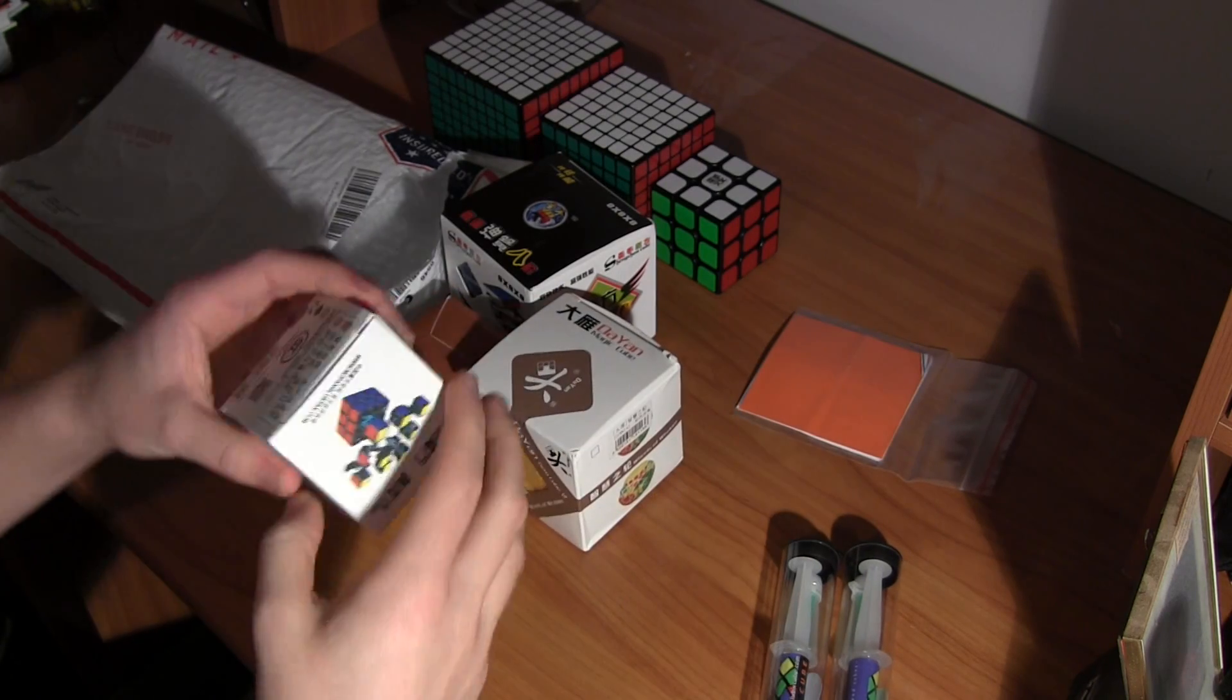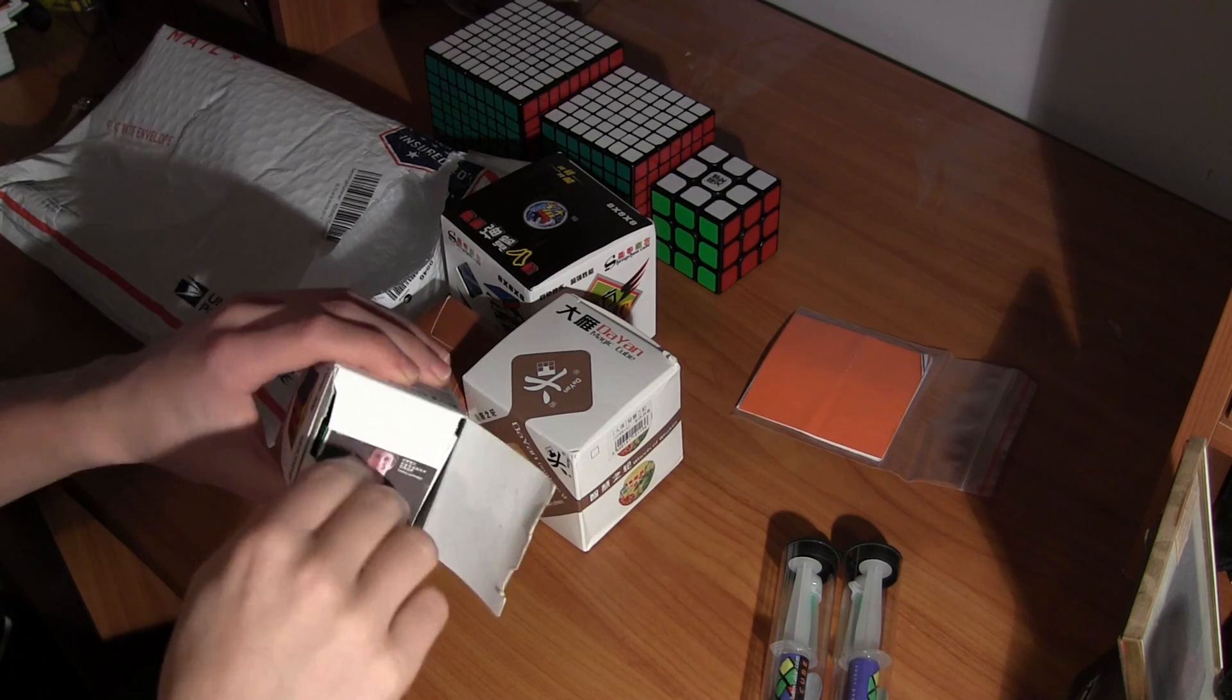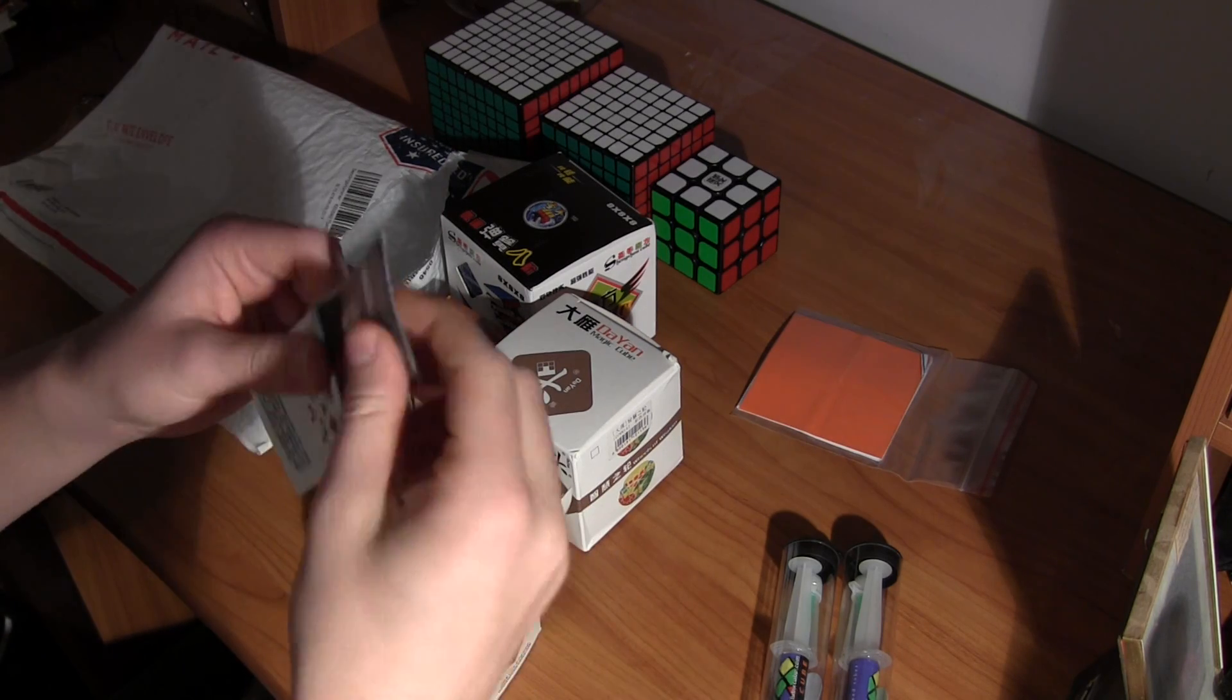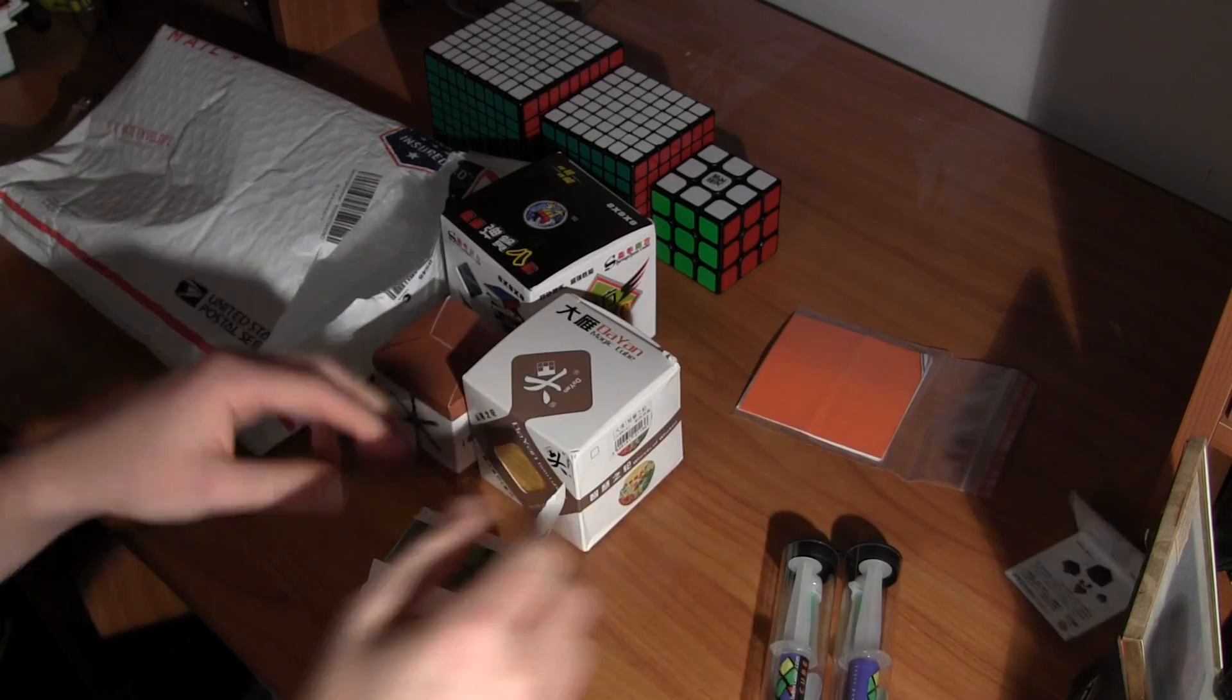Let's start with the Chilong. Yeah. I don't care about the boxes. Oh! Here's Felix holding a cube. Very cool.